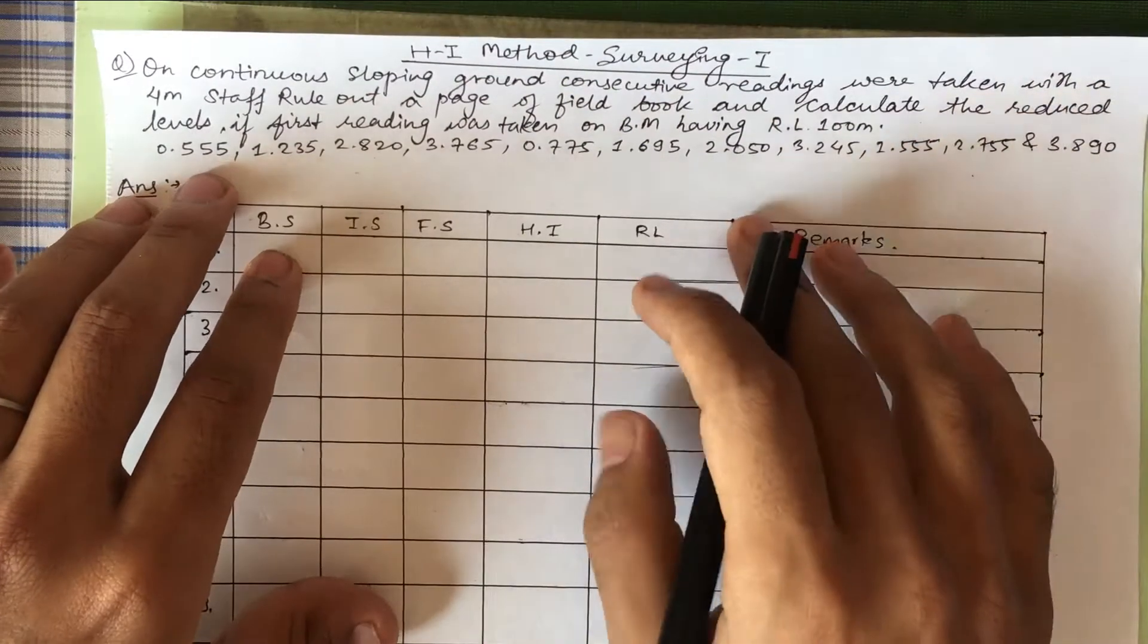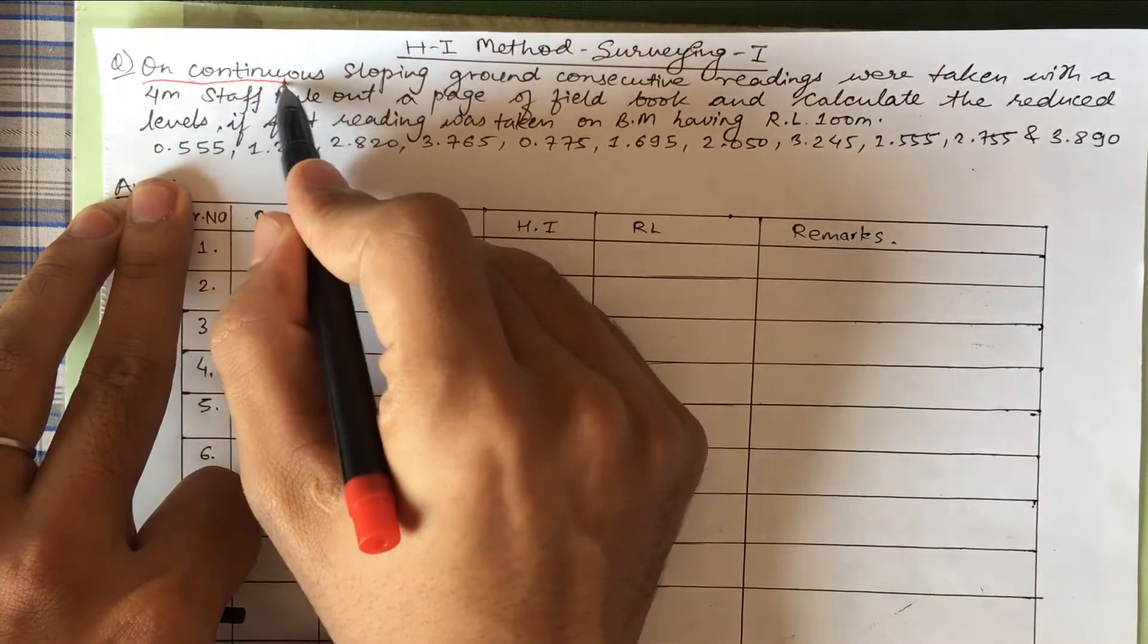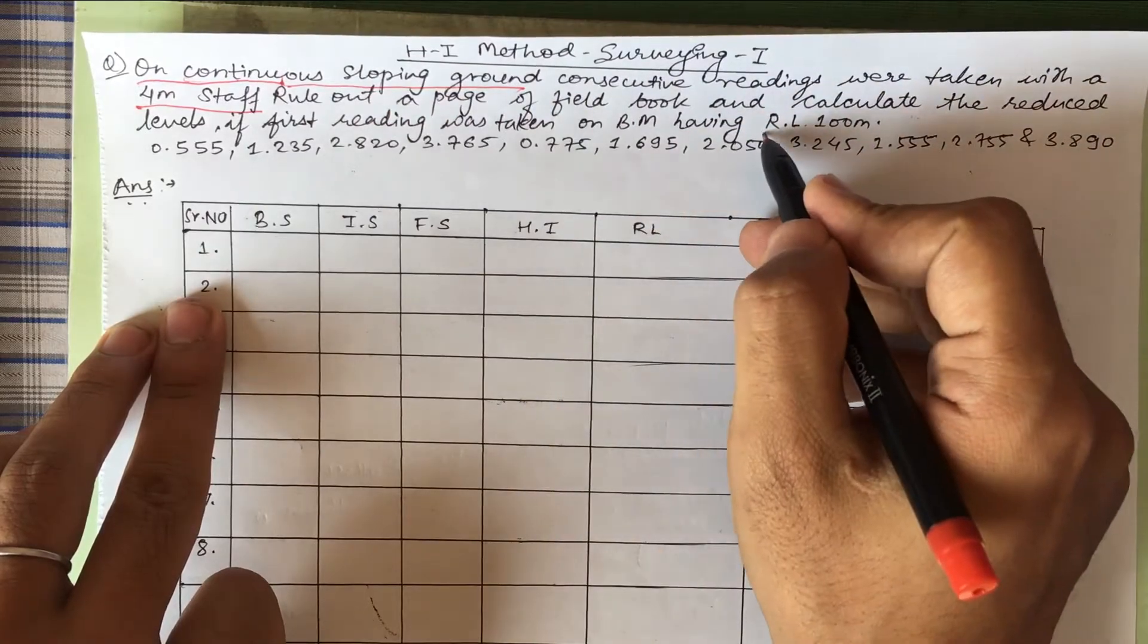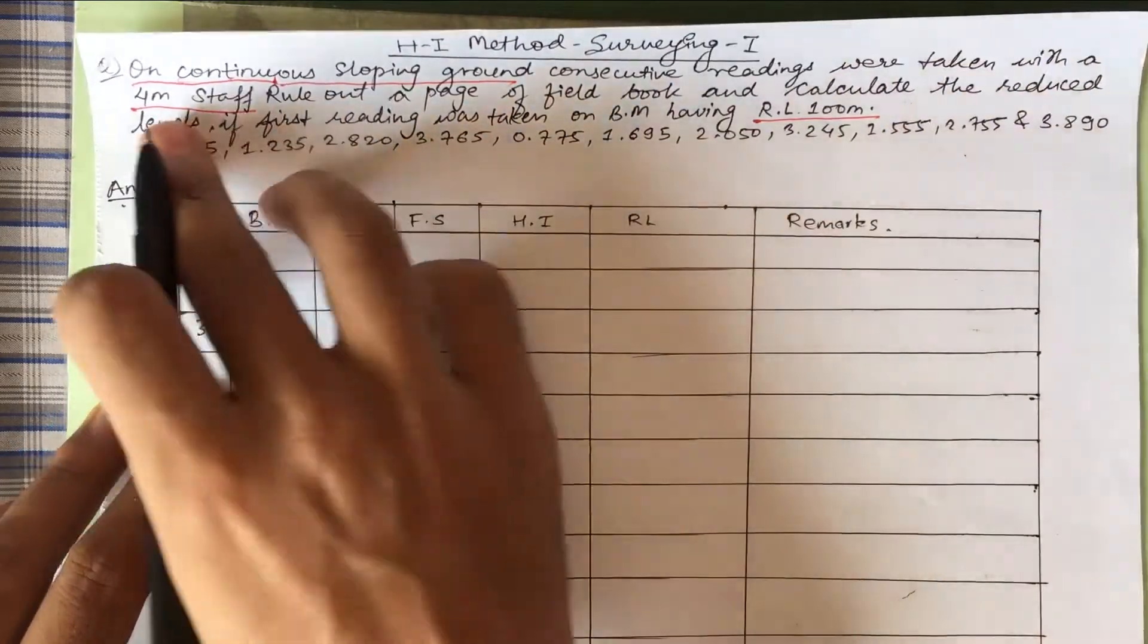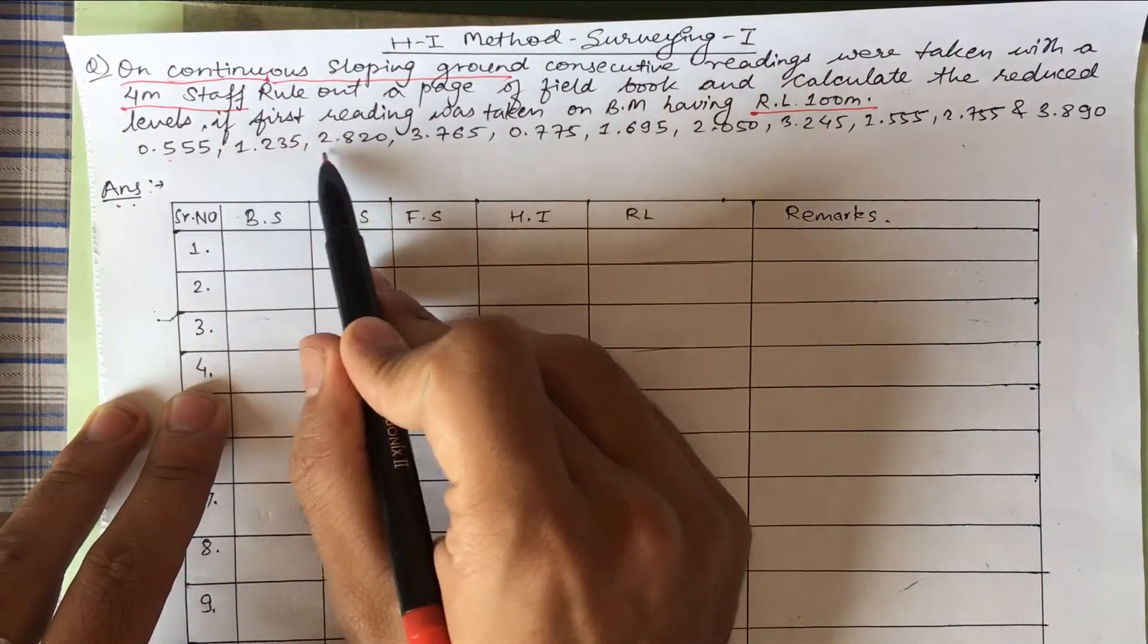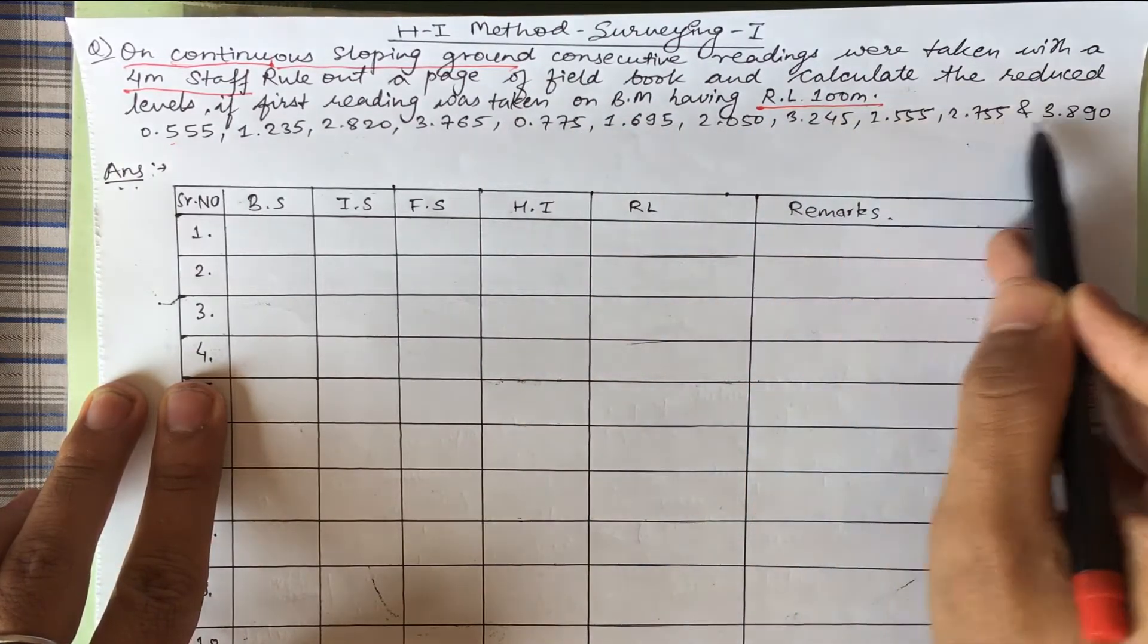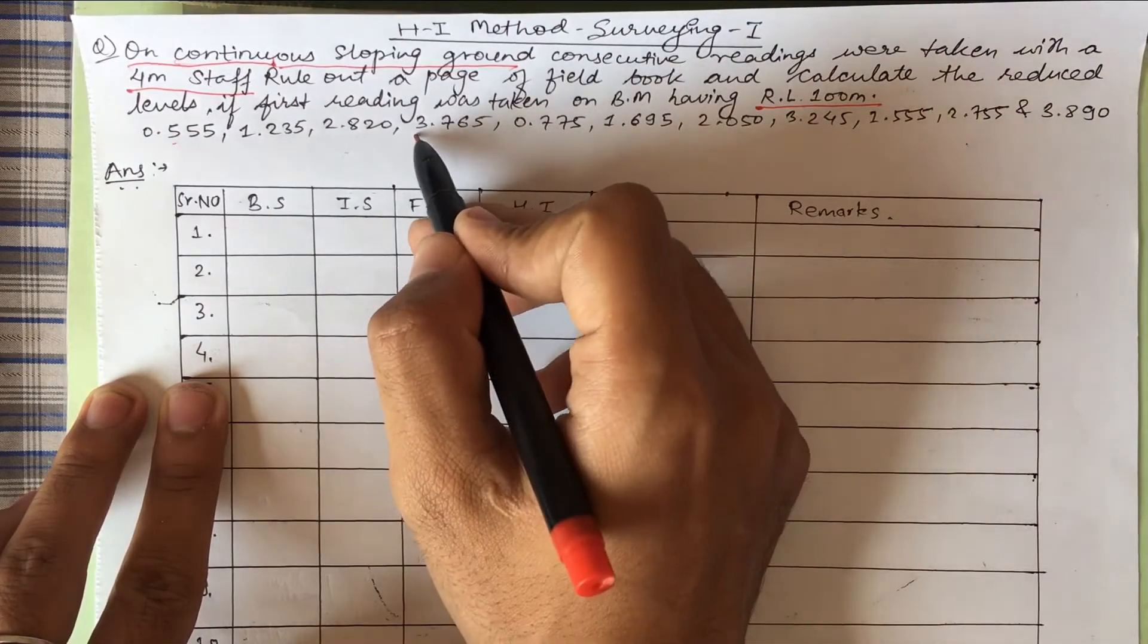Now let's see what are the given points. The question is on continuous sloping ground and we are given a staff of four meters. The reduced level is 100 meters. Our staff is at four meters, starting at 0.555, increasing up to 3.765. From here it suddenly decreases to 0.75, then again increases. Here 3.245, again decreases, and here again 3.890.